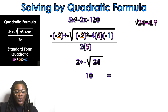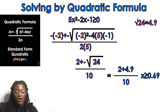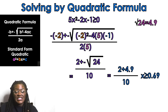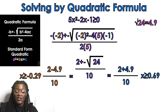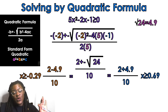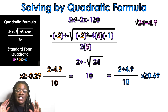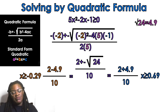So: 2 plus 4.9 over 10 gives x greater than or equal to 0.69. Then 2 minus 4.9 over 10 gives x greater than or equal to negative 0.29. We take the orange and blue answers over to the number line.